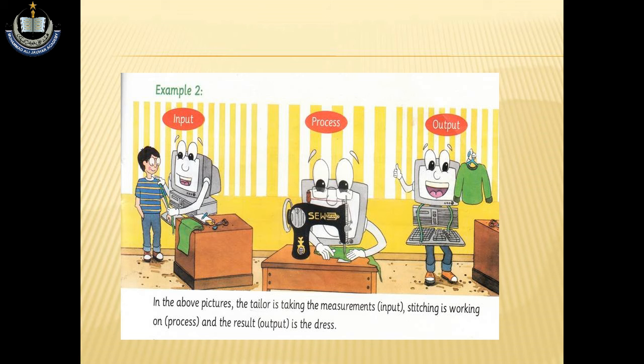Measurement لینے کے بعد جب وہ سلائی machine پہ، یعنی جب وہ stitches کر رہا ہے، وہ سلائی کر رہا ہے، سینے کا جتنا بھی عمل ہے وہ process کہلا رہا ہے۔ Process پورا مکمل ہونے کے بعد آپ کے سامنے آپ کا سلا ہوا سوٹ آ جاتا ہے۔ تیار کیا ہوا جو بھی سوٹ ہے وہ آپ کا output کہلائے گا۔